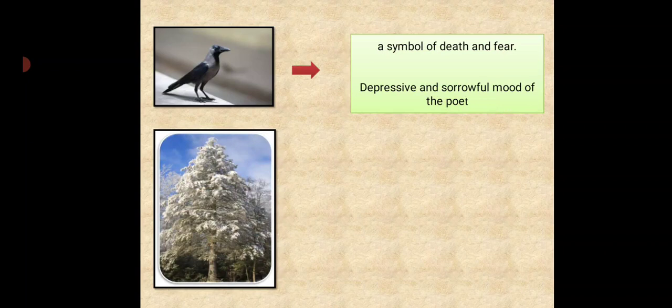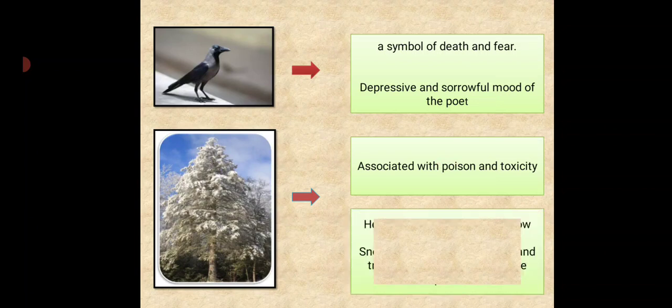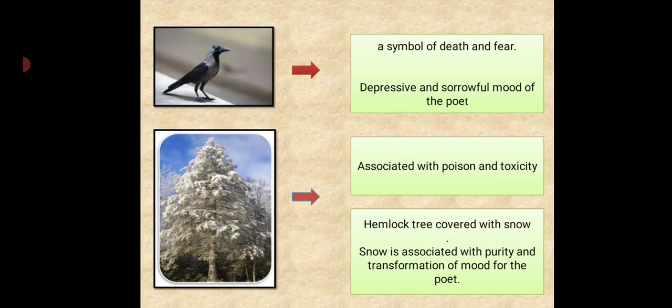Then he used hemlock tree that is covered with snow, small particles of snow. It represents, or you can say hemlock tree is associated with poison and toxicity. Whereas hemlock tree is covered with snow, so snow is associated with purity and the transformation of the mood of the poet.